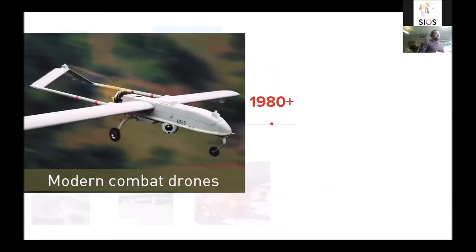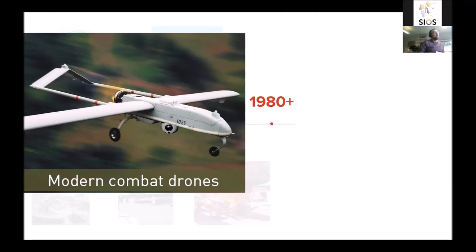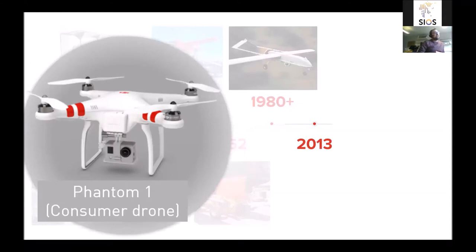In the 1980s, modern combat drones like the Predator were developed — their origins trace back to this period — and during the Gulf War the Americans had one of these drones in the air at all times. Then, notably more than 30 years later, we jump to 2013, when DJI, a Chinese company, launched the Phantom 1 — the first consumer-grade drone you could buy off the shelf, so easy to fly that basically a child could do it.